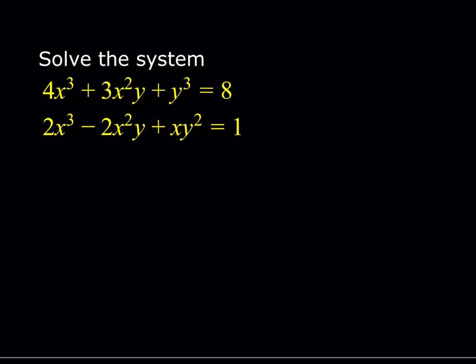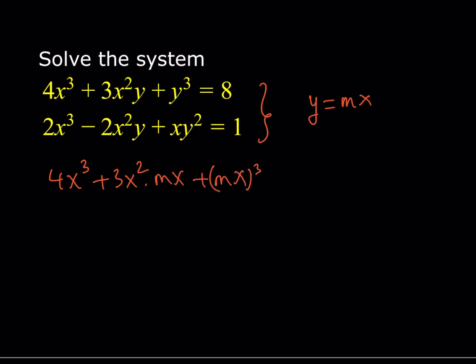So we're going to be using a substitution technique that works with these kinds of equations, and that is replacing y with mx, where m is a constant. We're assuming that y and x are proportional. In the first equation, I should be getting 4x cubed plus 3x squared multiplied by mx, plus (mx) cubed is equal to 8. Simplifying: 4x cubed plus 3mx cubed plus m cubed x cubed is equal to 8.